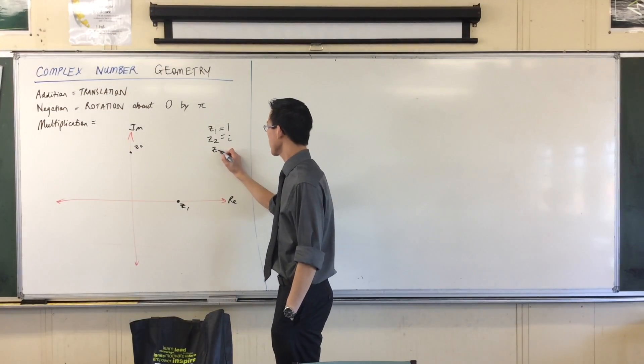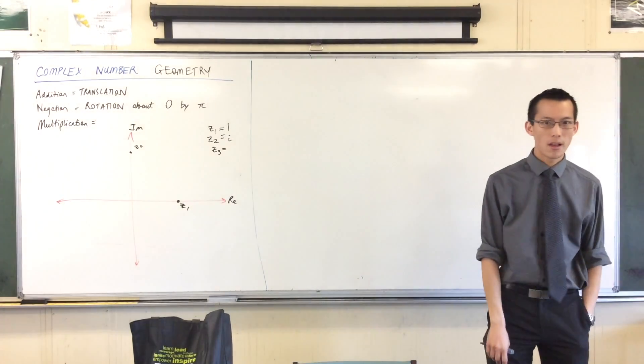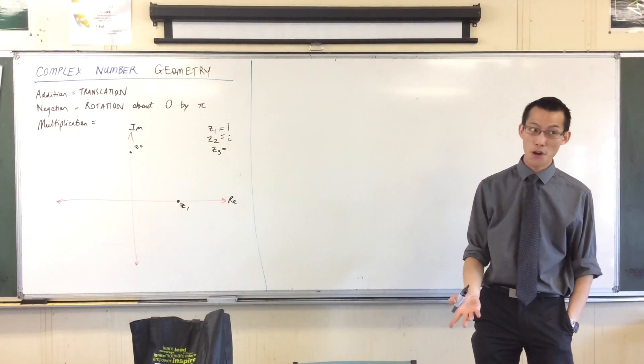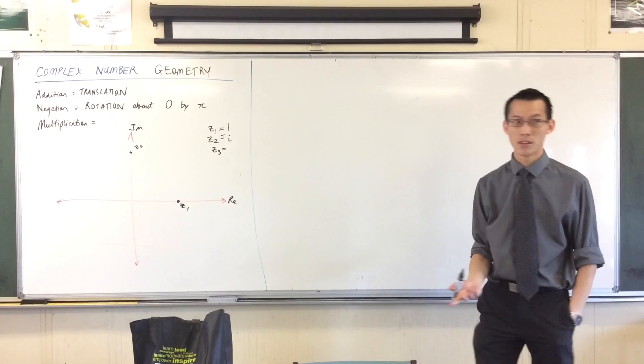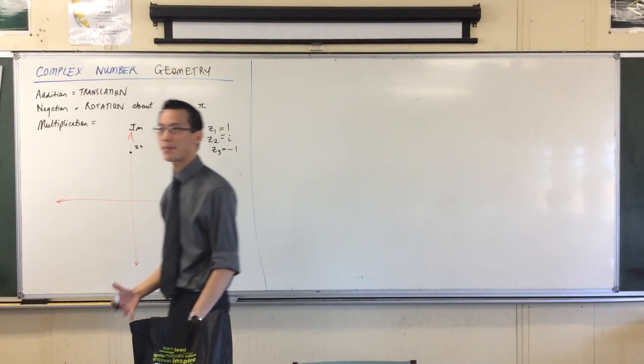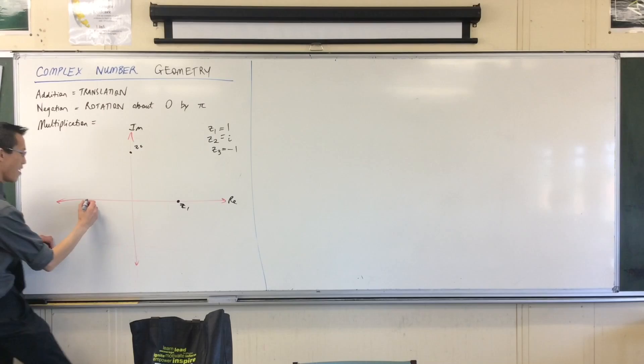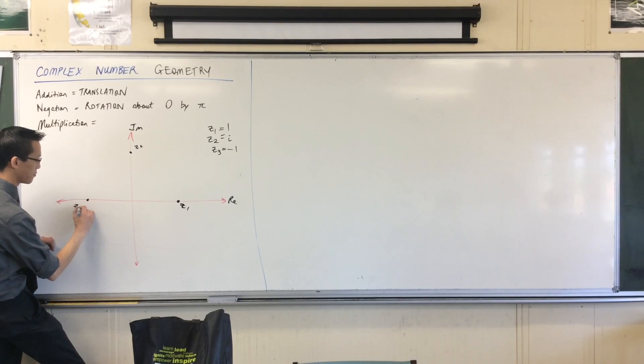So let's do it again. Z3, when I multiply by i again, I've got i squared now, but I know what i squared is. By definition, it's negative 1. Where is negative 1 on my complex plane? Negative 1 is completely real. It's purely real. So I'm back on the real axis over here.